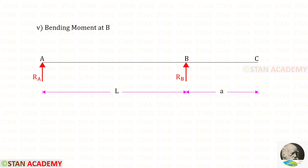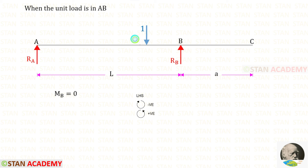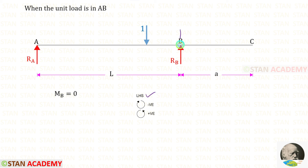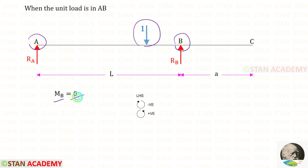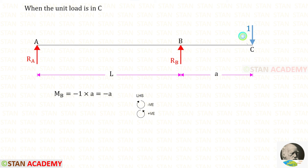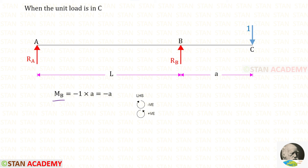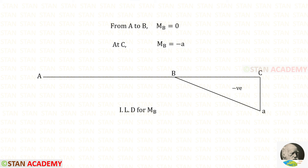Now we are going to draw the ILD for bending moment at point B. First, let us keep the unit load between A and B. Using the left hand side rule, up to point B there is nothing, so when the unit load moves from A to B, the moment at B will be 0. Now let us keep the unit load at point C. This load is acting in the clockwise direction so it will be negative and the distance is A. So for Mb, we will get minus A. This is the ILD for Mb.